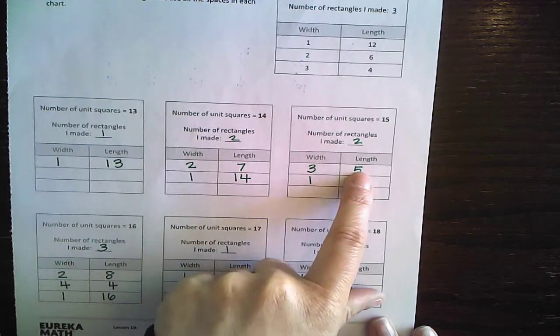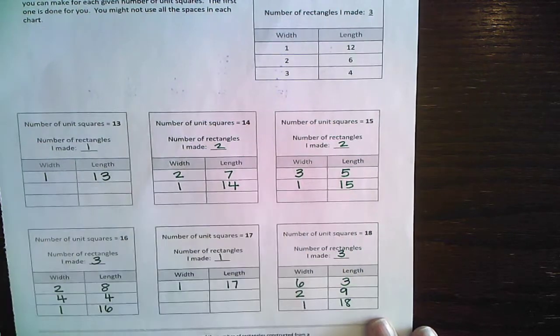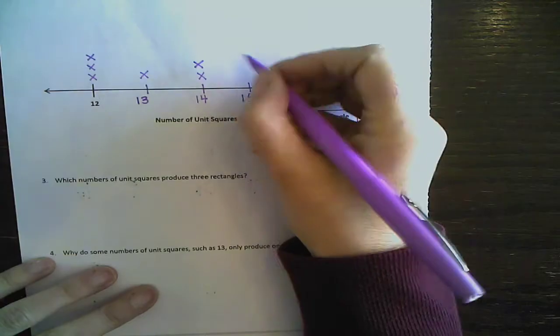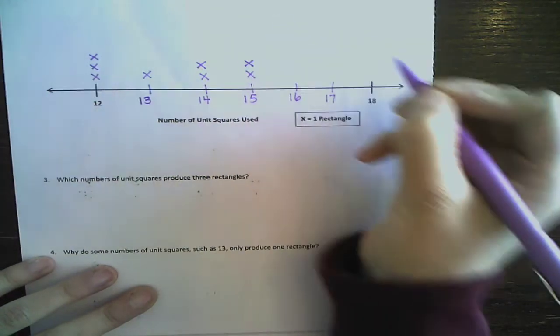How about 15? 15. I got three times five and one times 15. Same? Excellent. So that one has two also.